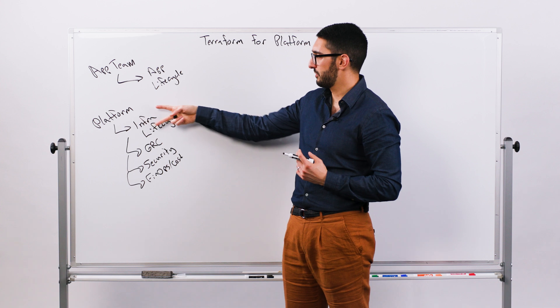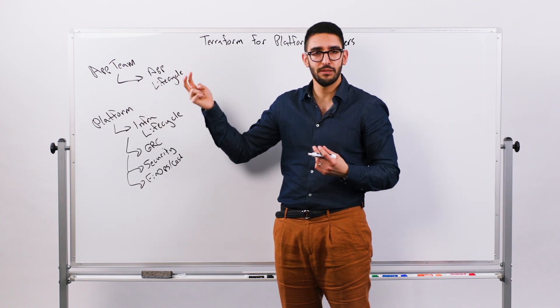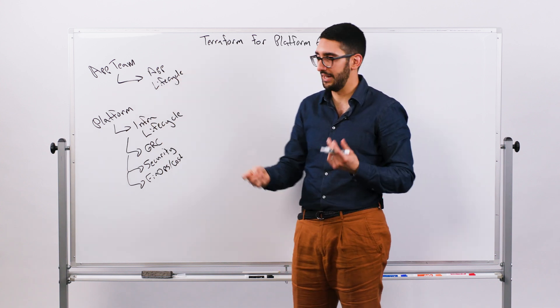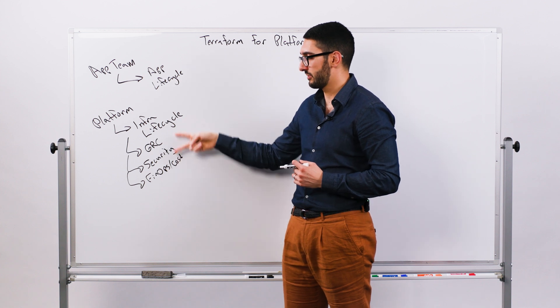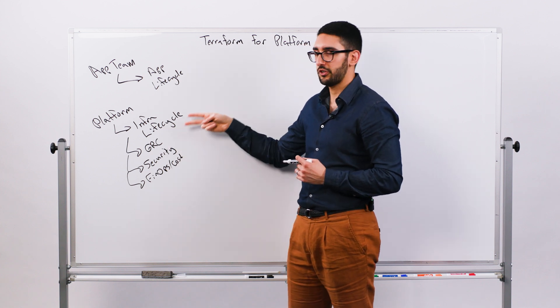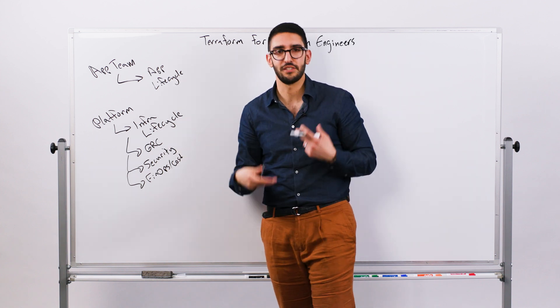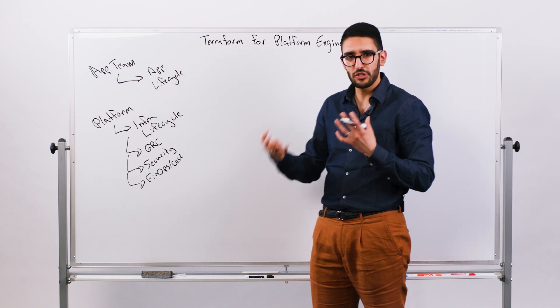So the platform team really has almost a primary customer, which is the app team. How do you enable them to build, deploy, manage their application? But you have a bunch of secondary customers as well to make sure the infrastructure is secure, it's patched, it's cost effective, et cetera. So you have a bunch of these different constraints.